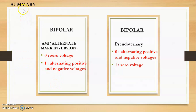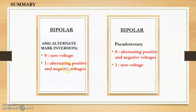Let us do a brief revision of what we discussed in this video. We studied the bipolar line coding scheme, which has two types: AMI and pseudo ternary. In AMI, bit 0 is represented as 0 voltage and bit 1 as alternating positive and negative voltages. In pseudo ternary it is the opposite: bit 0 is alternating positive and negative voltages and bit 1 is at 0 voltage.